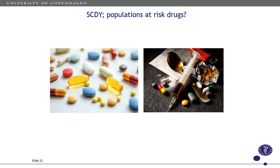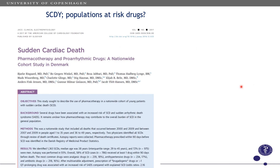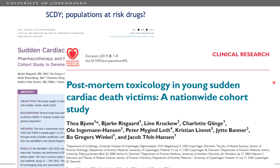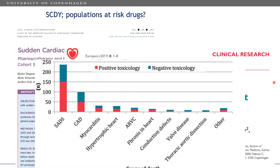Another risk factor for sudden cardiac death in the young is drugs. These can be both legally prescribed medication as well as illegal substances. We have looked into this in our nationwide registries as well as in toxicology reports, and found overall that there are more pro-arrhythmic drugs in cases with a blank autopsy — termed sudden arrhythmic death syndrome — compared to when there is a structural underlying cardiac disease.